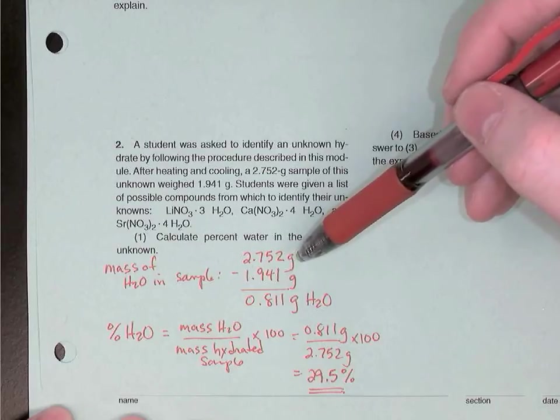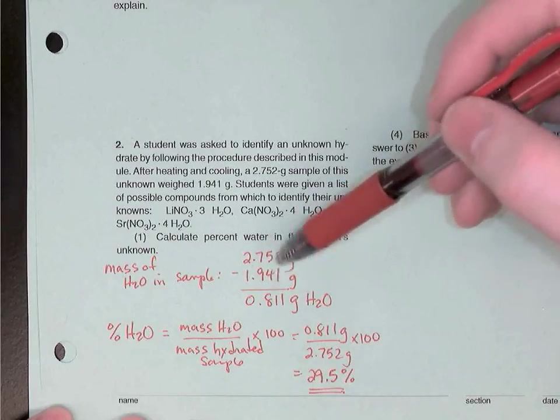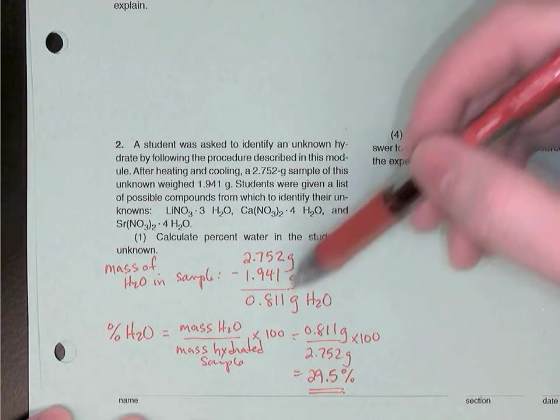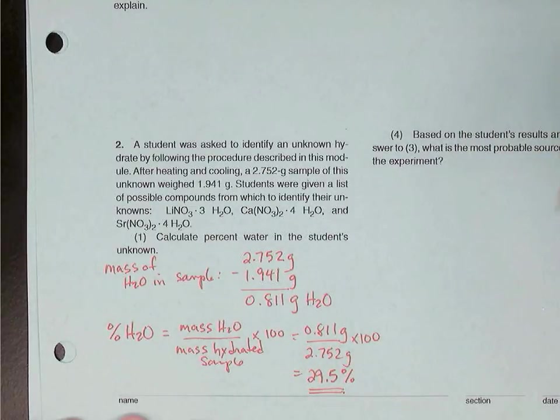And notice I'm following the rules for significant digits. When you add or subtract, you round off according to the number of decimal places. So I've kept three decimal places in that answer.